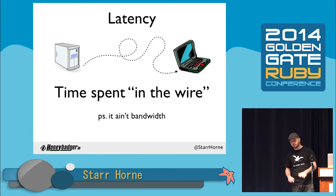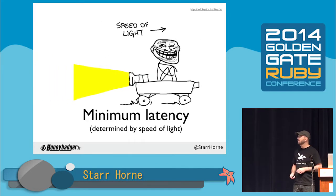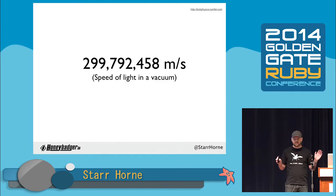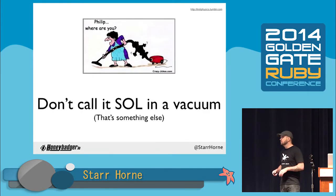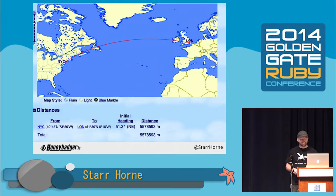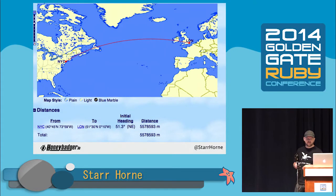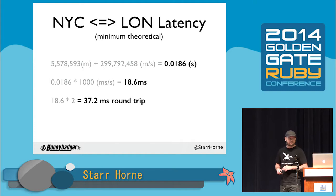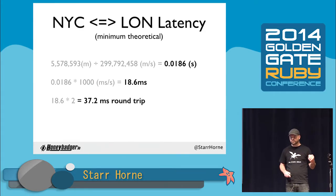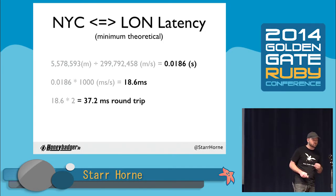The thing to know about latency is that it's got a lower bound, determined by the speed of light — 300 million meters per second in a vacuum. When you calculate the shortest distance between London and New York City, it's about 5.5 million meters. Do the math, and your minimum theoretical round-trip latency between New York City and London is about 37 milliseconds. And in fact it's longer than that, because we're not sending light through a vacuum — we're sending it through fiber, which is much slower.